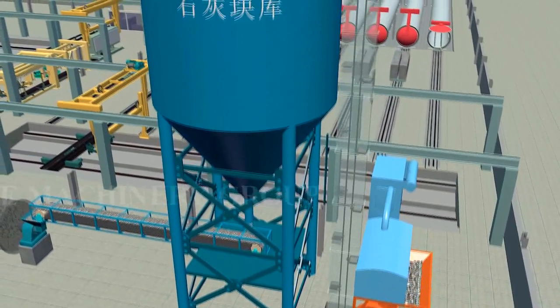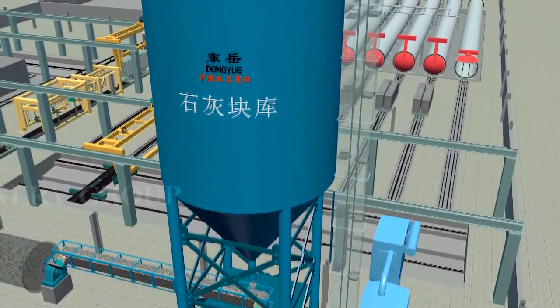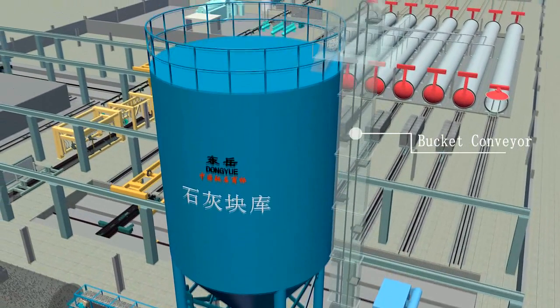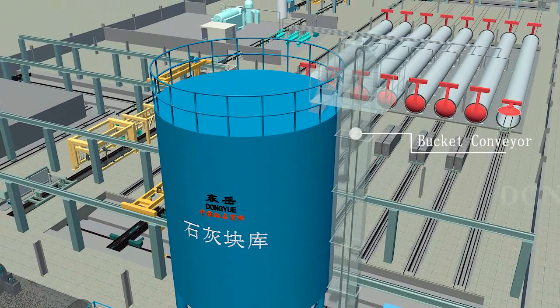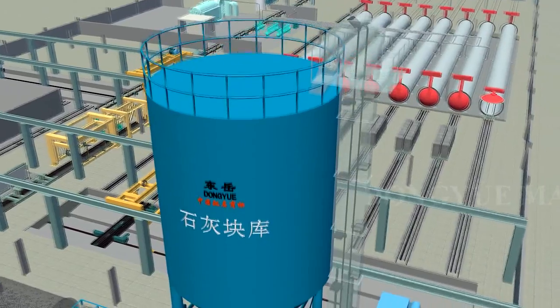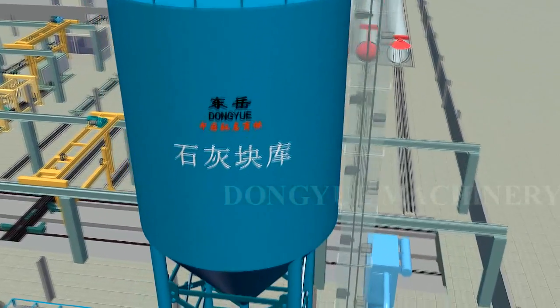The limestone is crushed by jaw crusher and comes into lime silo through elevator, then it will be grinded into powder by dry ball mill through belt conveyor.